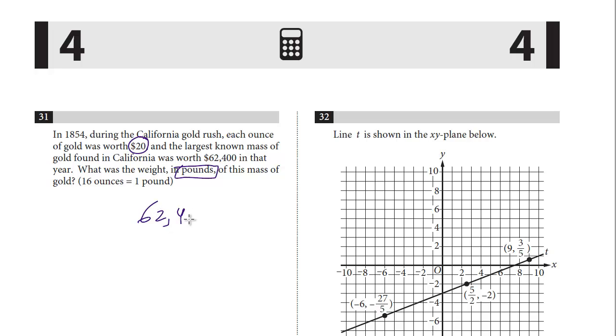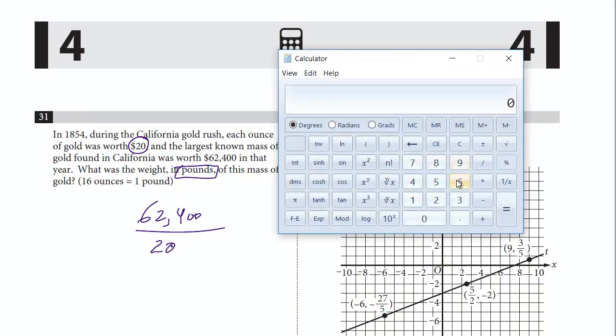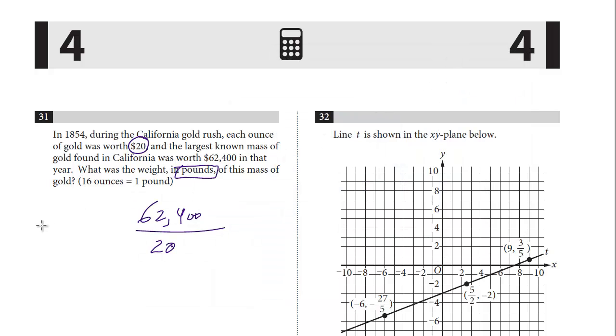We're going to take 62,400, and we're going to divide by 20, and this will give us the number of ounces. So just use your calculator. We've got 62,400 divided by 20, and we have 3,120 ounces.